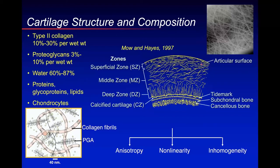Cartilage contains type 2 collagen oriented in different directions from the articular surface to the bone. Inside this collagen matrix are large macromolecules called proteoglycans, which consist primarily of hyaluronic acid long chains and glycosaminoglycan side chains — abbreviated as GAGs. Water content varies from 60 to almost 90% near the articular surface. This composition gives unique mechanical properties: the tissue is anisotropic, nonlinear (the more you load it, the stiffer it becomes), and inhomogeneous — properties near the articular surface differ from those near the deep center.